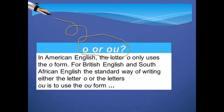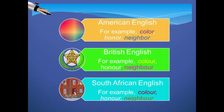What about the spelling for words ending in O and OU? In American English, only the O form is used — for example, color. For British English and South African English, the standard way of writing is to use the OU form — for example, colour.